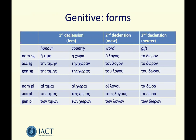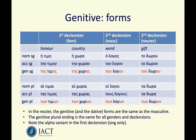In the second declension we have masculine forms like 'logos' and the neuter form 'dōron'. I've highlighted the genitive forms in both singular and plural. In the neuter, the form of the genitive is the same as the masculine — and in fact that's going to be the same for the dative as well. The neuter is only different from the masculine in the nominative and accusative lines, the top two lines of its table. Thereafter it reverts to the masculine forms.